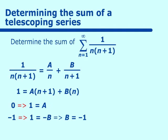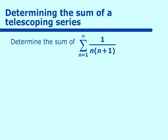Putting this back into our series notation, we get A, which is 1 over n, minus B, which is negative 1 over (n+1), and we're going to sum that from n equals 1 to infinity. Let's expand this.